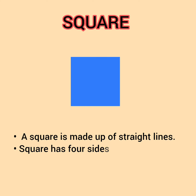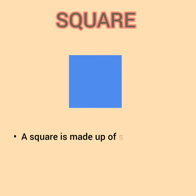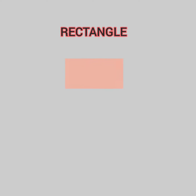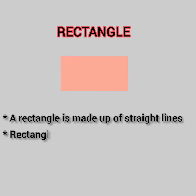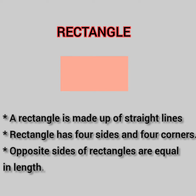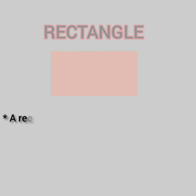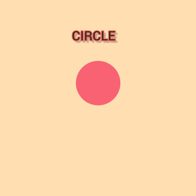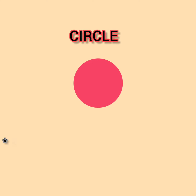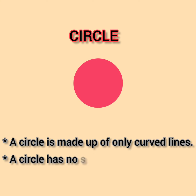Number two: rectangle. A rectangle is made up of straight lines. A rectangle has four sides and four corners. Opposite sides of a rectangle are equal in length. Circle. A circle is made up of only curved lines.